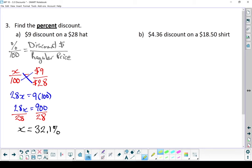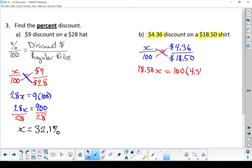One more time. We've got a $4.36 discount on an $18.50 shirt. What's the percent off? My discount is 23.6%.